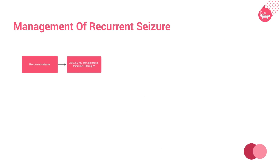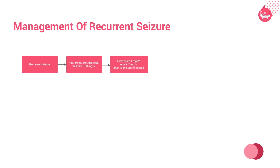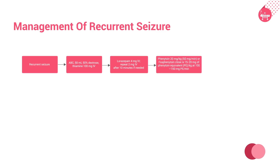The following flowchart describes the management of recurrent seizures. Management includes ABC, followed by IV administration of 50 mL of 50% dextrose and thiamine 100 mg IV. Lorazepam is administered IV at 4 mg, repeated with 2 mg after 10 minutes if needed. Phenytoin 20 mg/kg or fosphenytoin — a parenteral phenytoin prodrug — is administered at 100 to 150 mg phenytoin equivalent per minute.